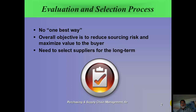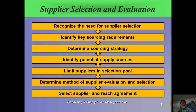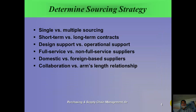One of the overall goals is selecting your suppliers for the long term. Here is a diagram — you may call it a procedure — and that is the objective of this chapter for selection and evaluation. The first step is to recognize the need for supplier selection. You identify key sourcing requirements, determine your sourcing strategy, identify potential supply sources, and limit suppliers down to better and better candidates. Then determine the method of supplier evaluation and selection, apply it, and finally select your supplier and reach an agreement.